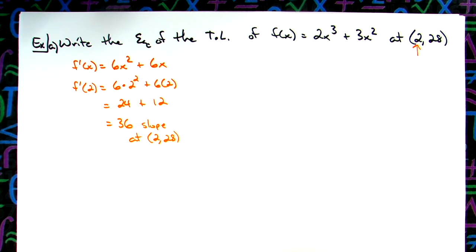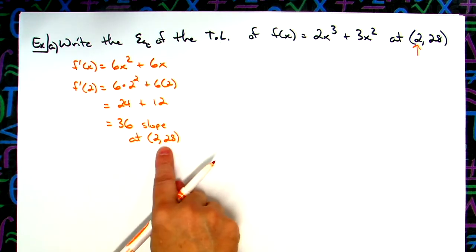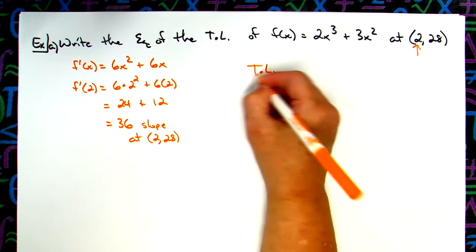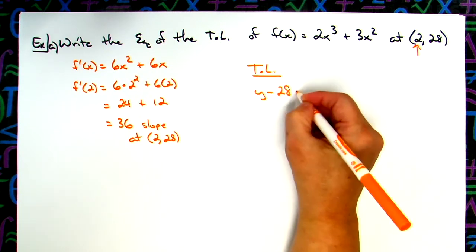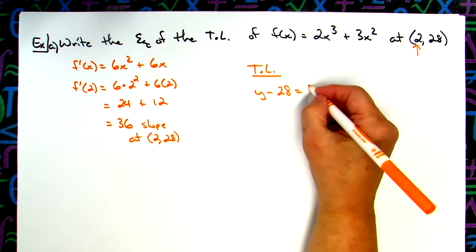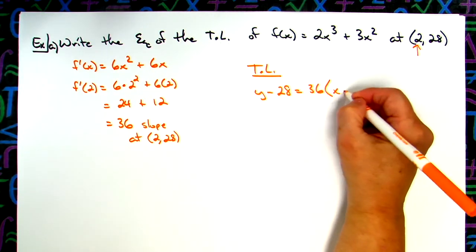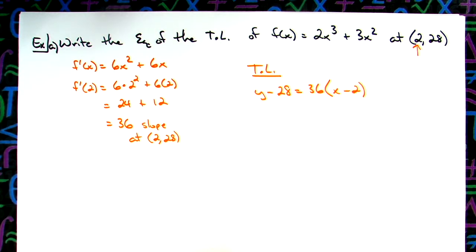Do I have enough information to write the equation of the tangent line? I do — I know my slope and I know my point. Using point-slope form, the tangent line is: y − 28 = 36(x − 2). And that's the tangent line.